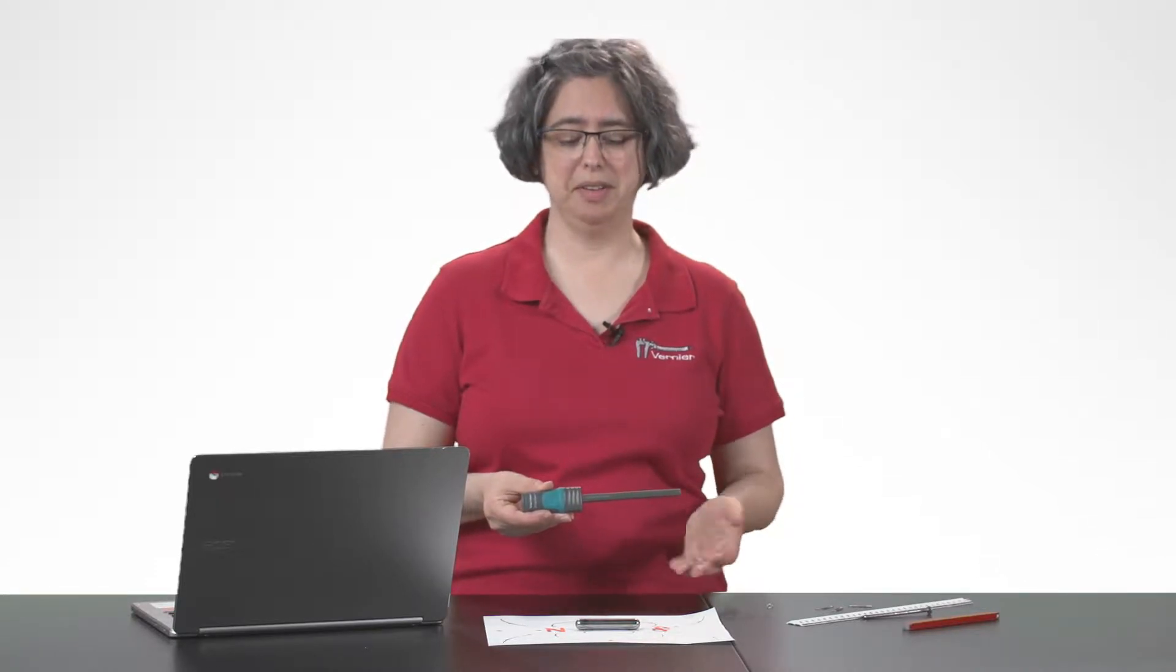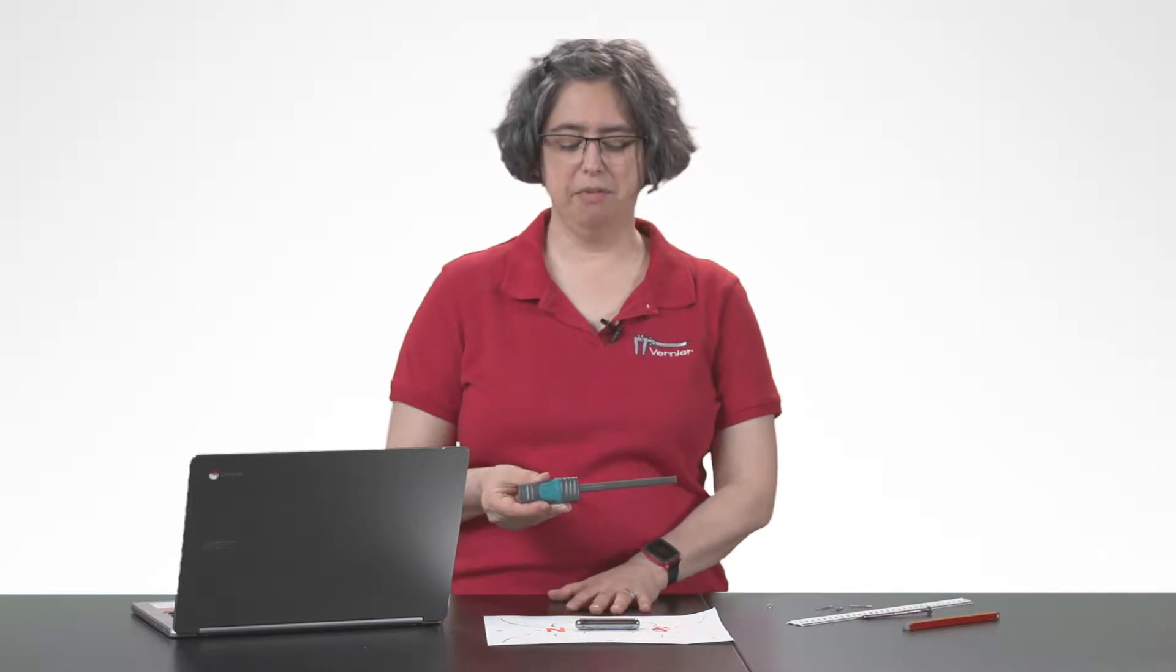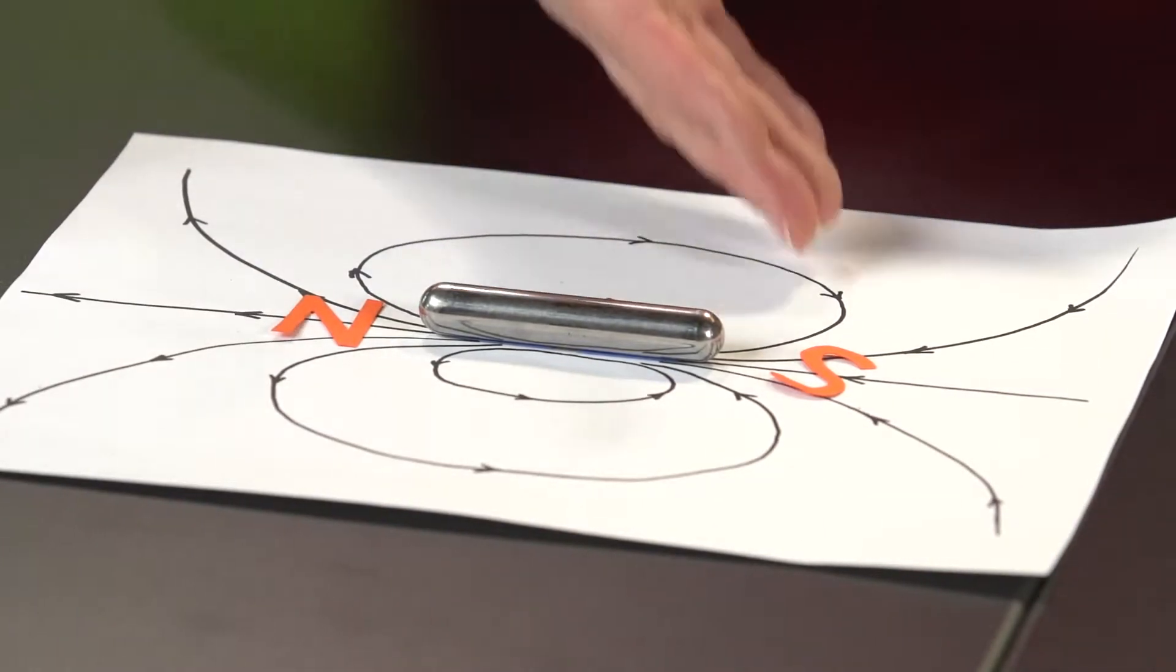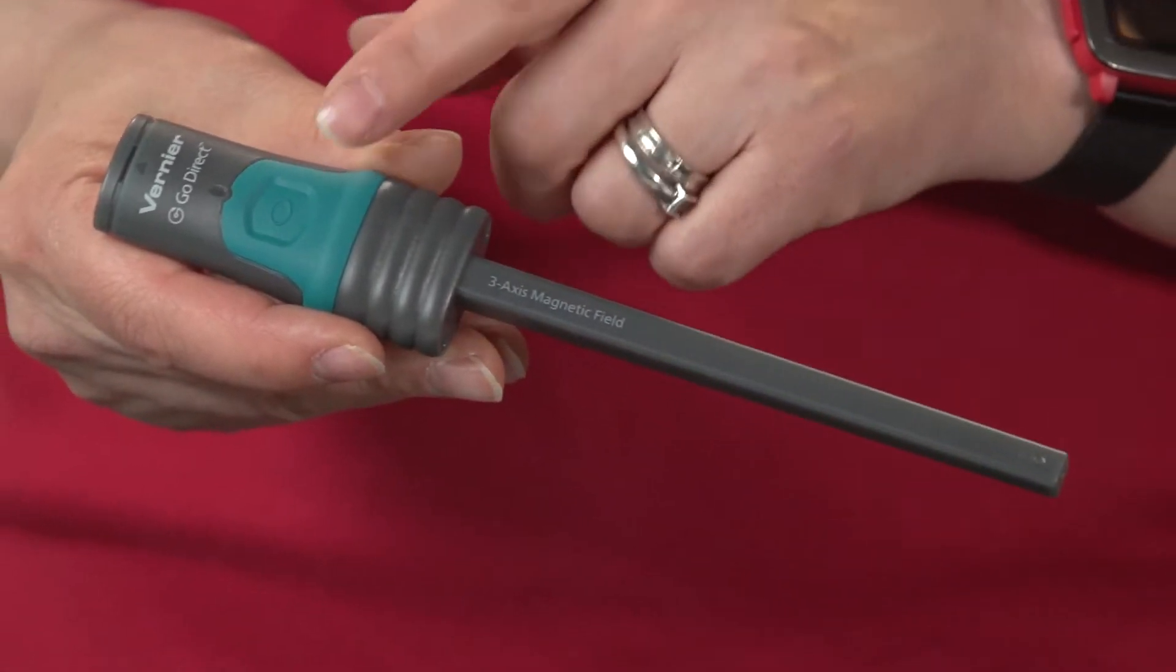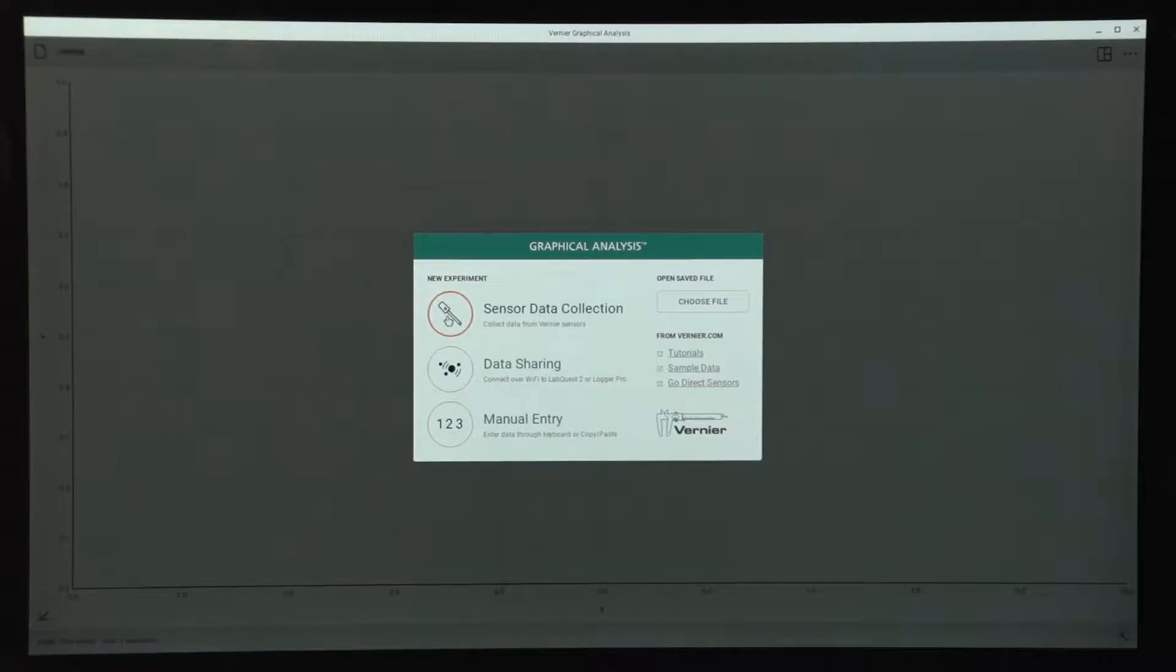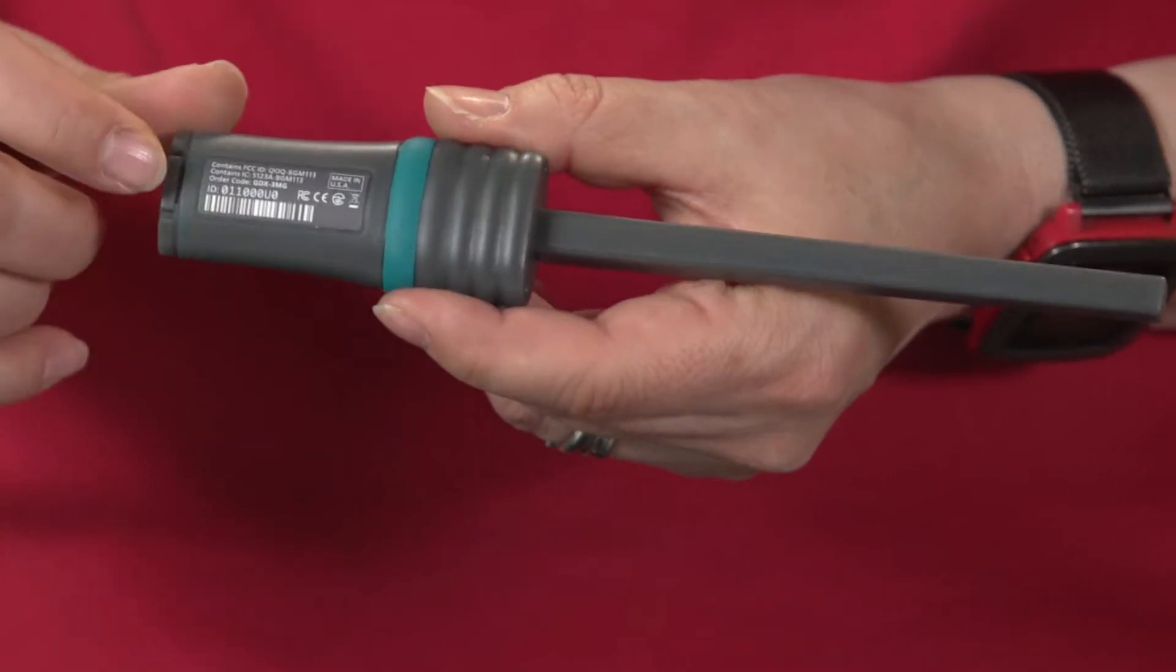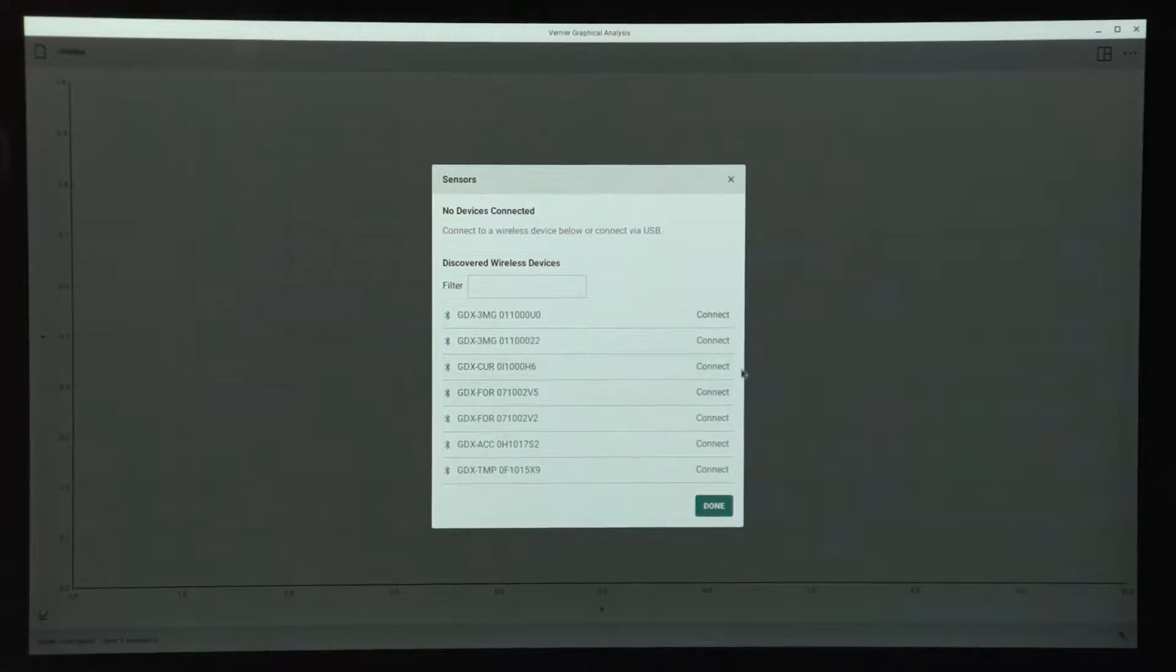So we're going to use it to take a look at some magnetic fields, starting with this one. Here I have a cow magnet. I have drawn the magnetic field around the cow magnet and labeled it with north and south. First I'm going to turn on the magnetic field sensor by pressing this button. Then the red light flashes, showing that the sensor is ready to connect. I'll choose sensor data collection on graphical analysis, and using the ID number on the back of the sensor, find that sensor in my list in graphical.